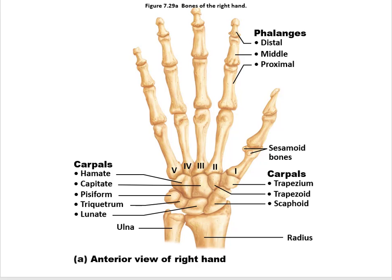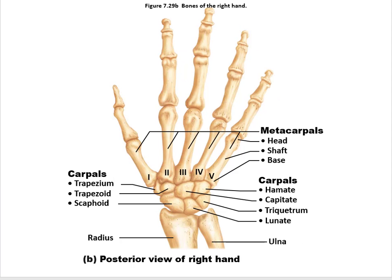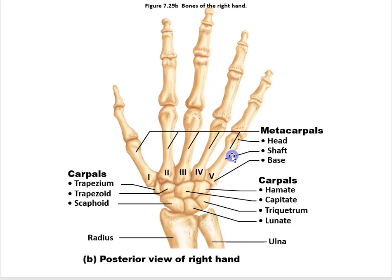Next are the metacarpals and phalanges. The metacarpals are numbered one to five, with the thumb as number one and the pinky as number five. So the first metacarpal is the metacarpal of the thumb, and the fifth metacarpal is the metacarpal of the pinky. Each metacarpal has three parts: a base (proximal), a shaft (diaphysis), and a head (distal).